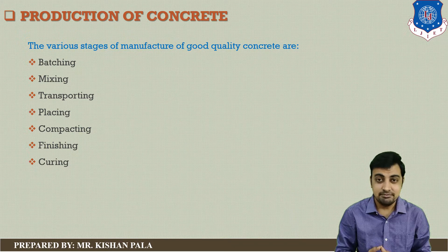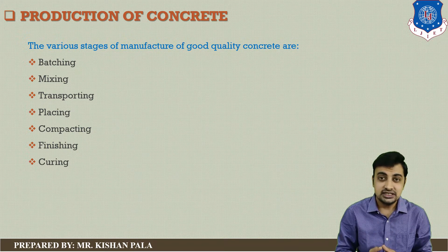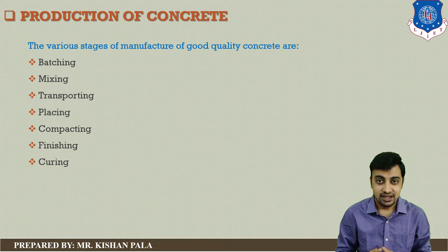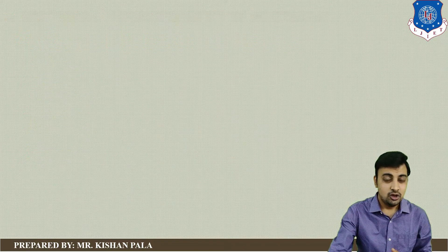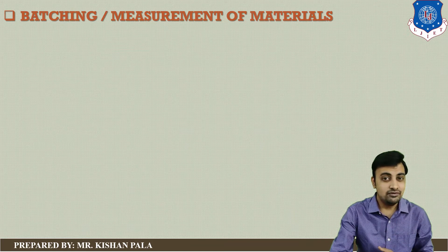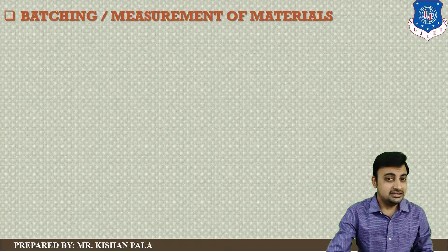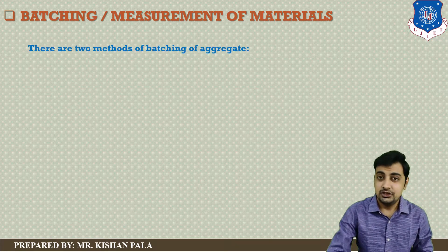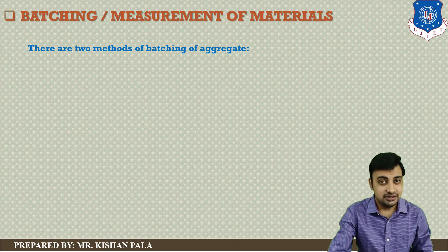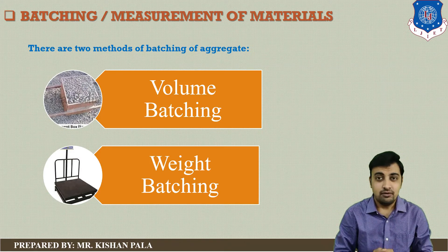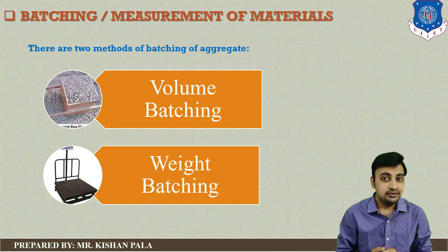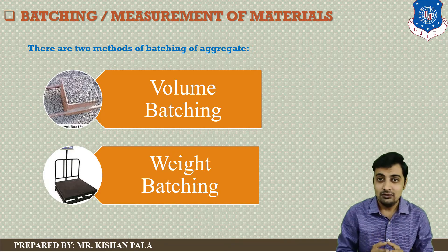Let us discuss all these steps step by step. In this session we will discuss about batching of concrete, and the remaining stages we will discuss in the next session. Batching or measurement of materials has two methods: volume batching and weight batching. Volume batching is preferred for small work or unimportant concreting work, while weight batching gives more accurate measurement compared to volume batching.